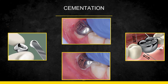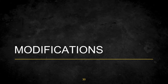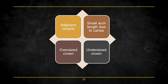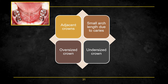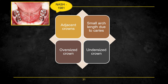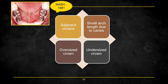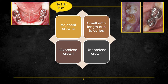There are various modifications for special cases. For adjacent crowns — placing crowns on both primary first and second molars — Nash (1981) stated that occlusal preparation of one tooth should be completed before starting on the other, using the unprepared tooth as a reference. All other reductions, trimming, contouring, and cementation of both crowns should be done simultaneously. Nash recommends starting from the posterior tooth first.